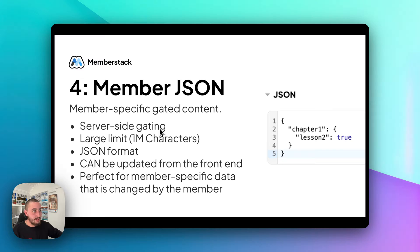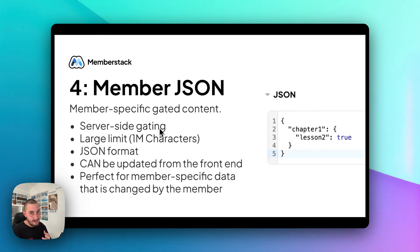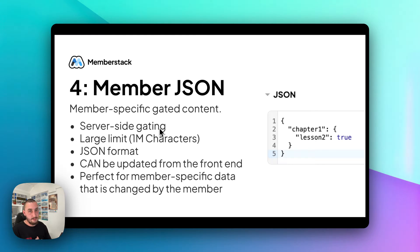Now let's talk about the next method, and now we're getting into member-specific stuff. What member JSON is, is basically some data associated with a member hidden inside of that member, and it can only be accessed by them. This can be added in a number of different ways — it could be added through Zapier and Make, it can be added using the front-end API. It is server-side gated as well, which means the only people who are going to be able to access this are the member who actually has that specific JSON. Nobody else is going to be able to access it.